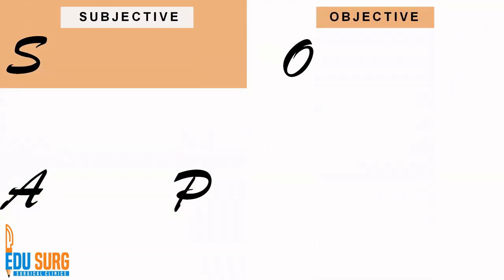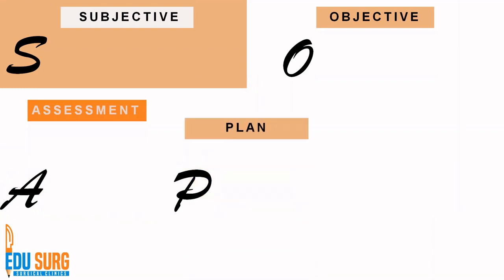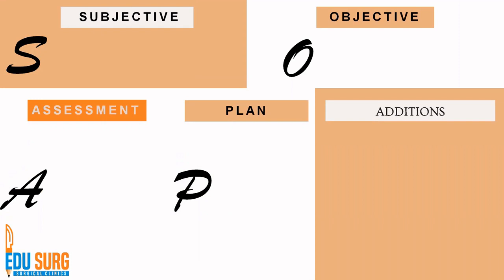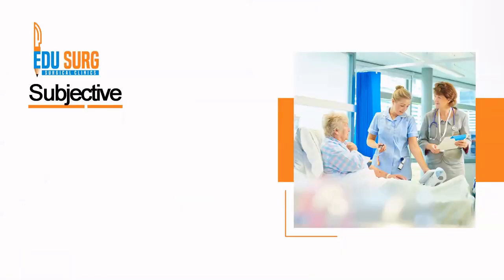SOAP is an acronym. It stands for Subjective assessment, followed by Objective assessment, then your overall Assessment of the patient, then Plan for the patient. There are some additions for completeness of record keeping, and that is SNDT. We will see SNDT in upcoming slides, but remember that besides SOAP — subjective, objective, assessment and plan — that you need to mention daily in your rounds for each and every patient, SNDT is very important medico-legally and from a record keeping point of view.